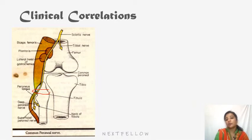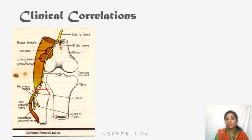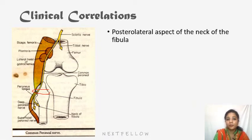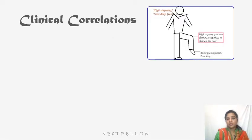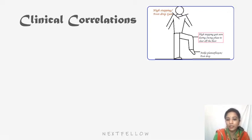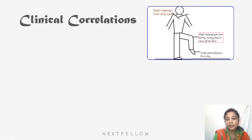Note that the nerve lies within the fibular tunnel or peroneal tunnel, present underneath the peroneus longus muscle. Because of a fracture it can get entrapped by the fibularis longus within this tunnel. The symptoms of damage to the common peroneal nerve at the neck of the fibula — the most common site of injury — include high stepping gait, also called foot slapping gait, due to foot drop.